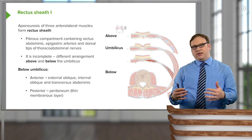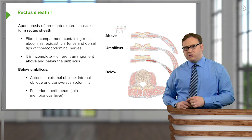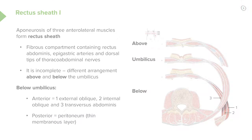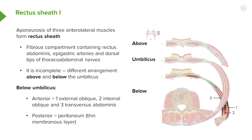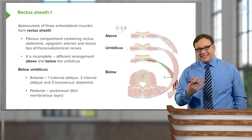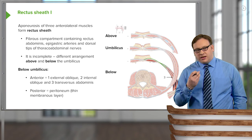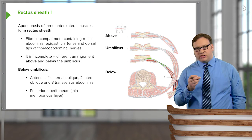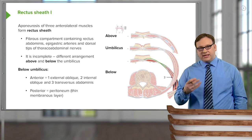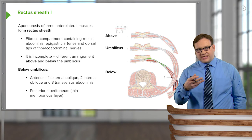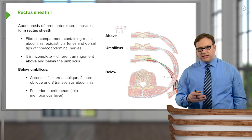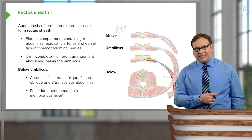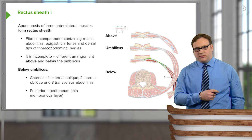The only thing we have posterior to rectus abdominus is transversalis fascia and then the peritoneum. We can see it here. External oblique, internal oblique, transverse abdominus — we can see that the aponeurosis from these muscles all pass anterior to rectus abdominus. So above and below the umbilicus, the rectus sheath is very different. Above it, internal oblique is divided — a lamina goes anterior and a lamina goes posterior. Below the umbilicus, all three aponeuroses pass anterior to rectus abdominus to then merge with the linea alba.